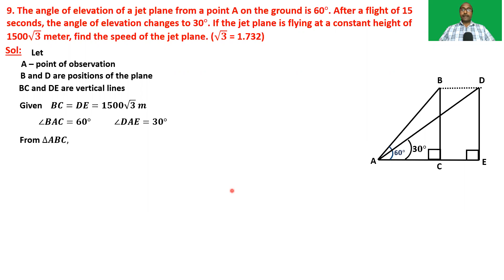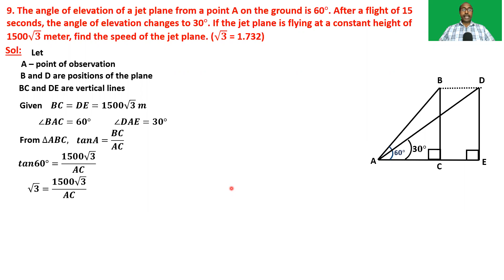From triangle ABC we have tan A equals BC by AC, that is tan 60° equals 1500√3 by AC. We know tan 60° equals √3, so AC equals 1500√3 by √3, which equals 1500 meters. So we got the distance AC.